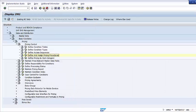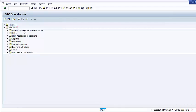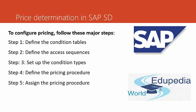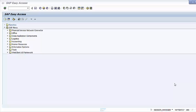Go back to the SAP Easy Access menu. We have successfully configured pricing: we defined the condition tables, the access sequences, we set up the condition types, we defined the pricing procedure, and we assigned the pricing procedure. Now we will talk about price records. After configuring the pricing procedure, you have to maintain the master data for the pricing condition records — the system will read the actual values of the pricing conditions from these master data records.